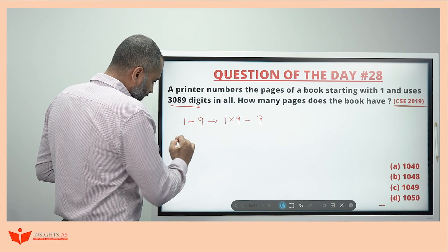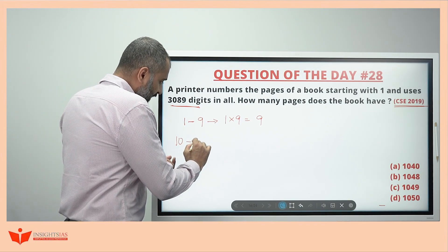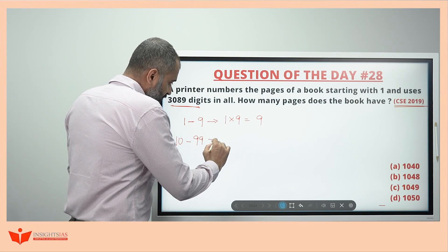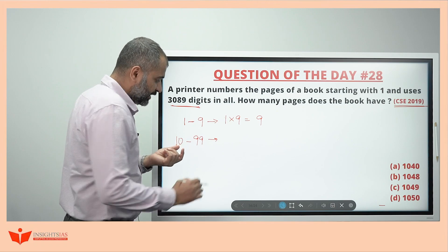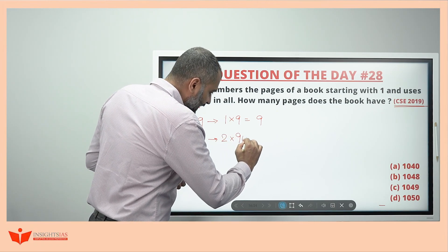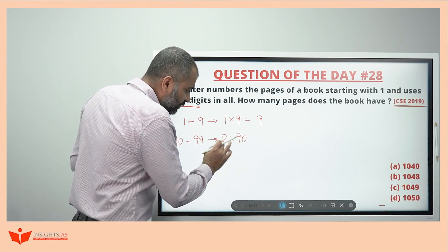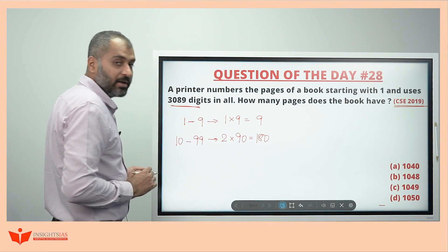Now starting from 10th page, 2 digits are printed here. Till 99, that is from 10th to 99, 2 digits are printed. That is 90 numbers are there. Each number of 2 digits, so totally 180 such digits are printed.